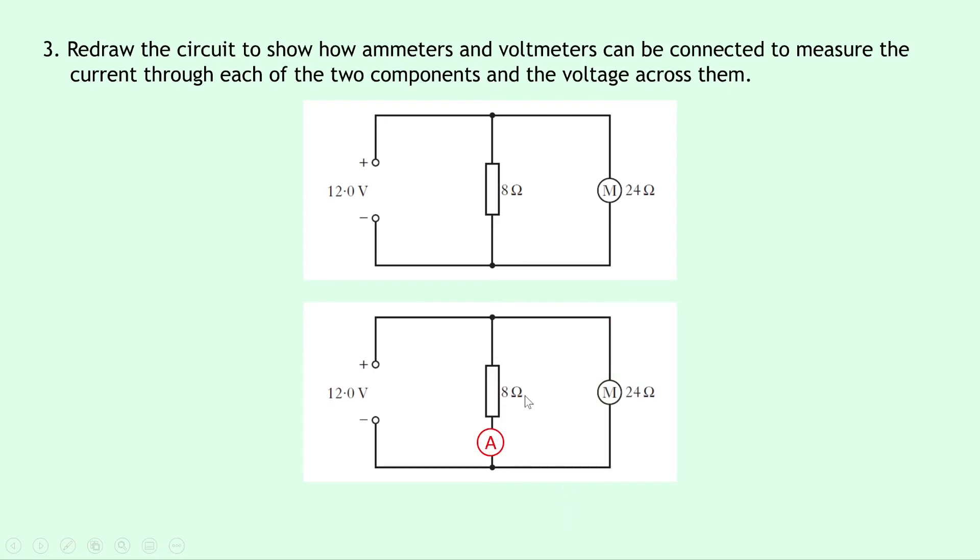If we were then to connect the voltmeter, we would need it in parallel. So I'm going to draw it to the right of it like this, and we would then do the exact same for the motor. So we would put the ammeter next to the motor in series, and then we would put the voltmeter in parallel with the motor.